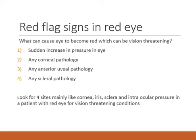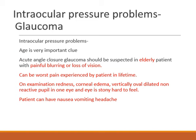The main structures which cause vision-threatening red eye are: any pathology in the cornea like keratitis or a corneal ulcer, any anterior uveal pathology like iritis, any scleral pathology like scleritis, or any pathology related to intraocular pressure like glaucoma. So look at four structures when approaching a red eye: cornea, iris, sclera, and pressure.